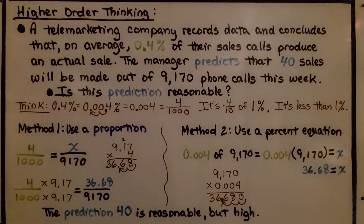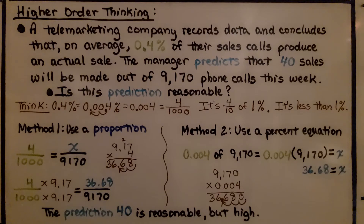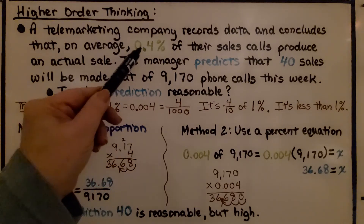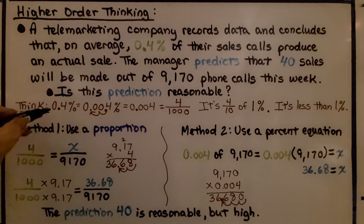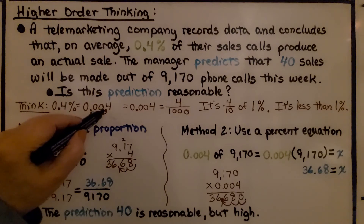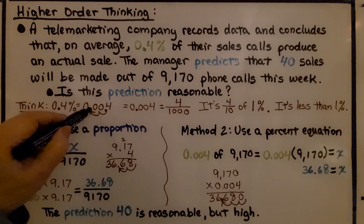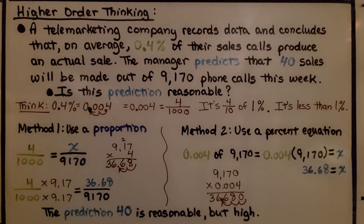Let's try some higher-order thinking. A telemarketing company records data and concludes that, on average, four tenths of a percent of their sales calls produce an actual sale. The manager predicts that 40 sales will be made out of 9,170 phone calls this week. Is this prediction reasonable? Note: this is not four percent — it's four tenths of a percent, 0.4%. To convert it to a decimal, we remove the percent sign and move the decimal two places to the left, giving us 0.004 — four thousandths, which is less than one percent.